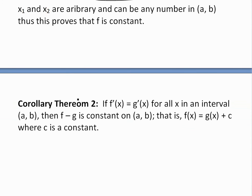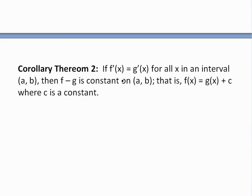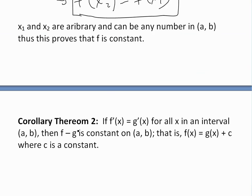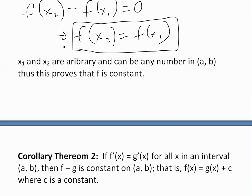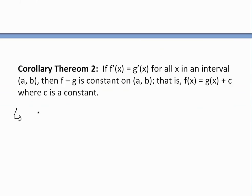Now we'll cover Corollary Theorem 2, which is a corollary to the exact theorem we just went over. It states: if f'(x) equals g'(x) for all x in an interval (a, b), then f minus g is constant on [a, b], and that is basically f(x) equals g(x) plus c, where c is a constant. This theorem builds directly on the previous one. The previous dealt with derivative of zero; now we're dealing with when it could be any kind of function. The proof is pretty straightforward.